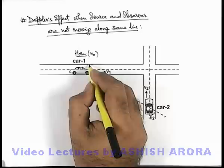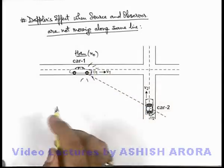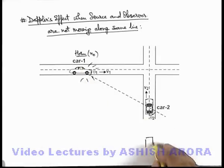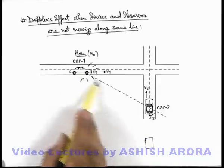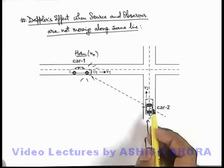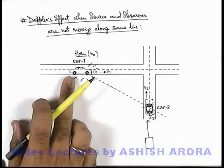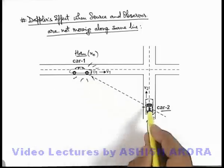We know well that due to an isotropic source the sound is produced in all directions. Say at the instant when car 1 has produced a horn, car 2 was located far away from this crossing. And when the sound of this horn approaches the position of car 2, car 2 has reached here. That means this is the position of car 1 shown in the picture where it has produced the horn, and the position of car 2 shown in the picture is when it will receive the sound of this horn.